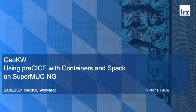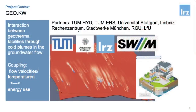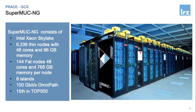The project GeoKV is a collaboration between TU Munich, the Universität Stuttgart, the Leibniz Rechenzentrum, the Stadtwerke München, the RGU (Referat für Gesundheit und Umwelt), and the LFU (Bavarian Landesamt für Umwelt). The simulation is about coupling a hydrogeologically simulated groundwater flow with energy optimization tools, and we want to get this to run on a large scale on SuperMUC-NG, our HPC system at LRZ.